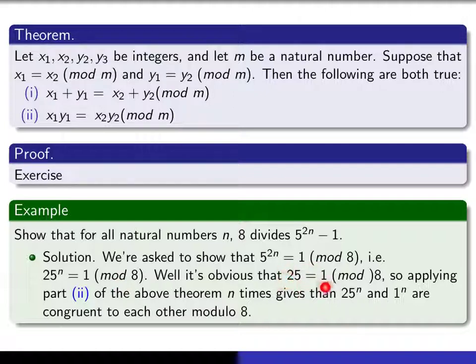Well, it's obvious that 25 is congruent to 1 mod 8 because 25 minus 1 is equal to 24 and 8 divides 24. Oh, by the way, there's a little typo here. The parenthesis should be on the other side of the 8. So if you apply part 2 of the theorem, in other words, you multiply 25 by itself n times, that must be congruent to 1 multiplied by itself n times. In other words, 25 to the n is congruent to 1 to the n modulo 8. 1 to the n, of course, is just 1. And so that gives you the result. So it's really a very simple application of this result applied n times.